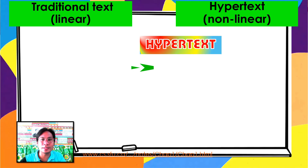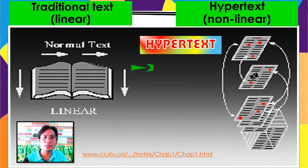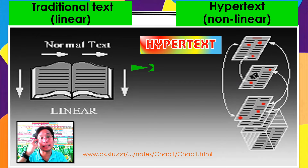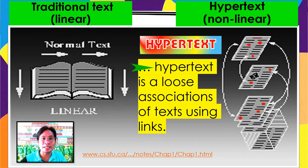Traditional texts are linear — also called intertext — or the specific texts found in other materials. Hypertext is nonlinear, as shown in the image. It is an association or connection of text from other links, usually online. We can also personalize and create hypertext offline by using links or hyperlinks. So hypertext is a loose association of texts using links.